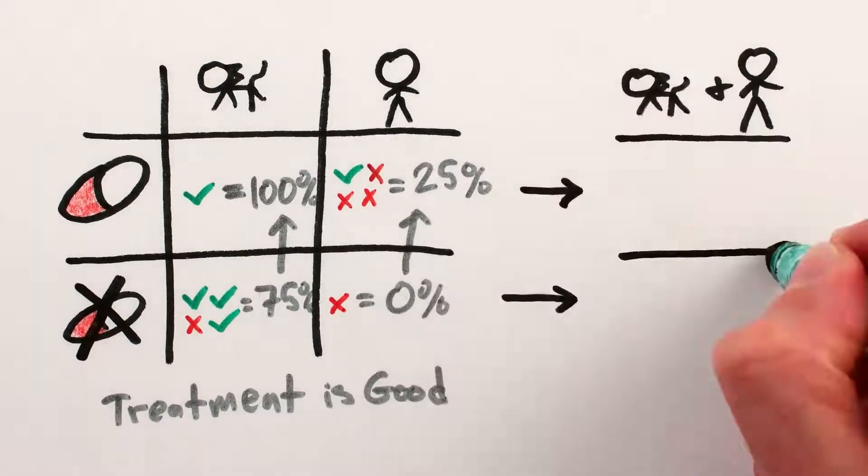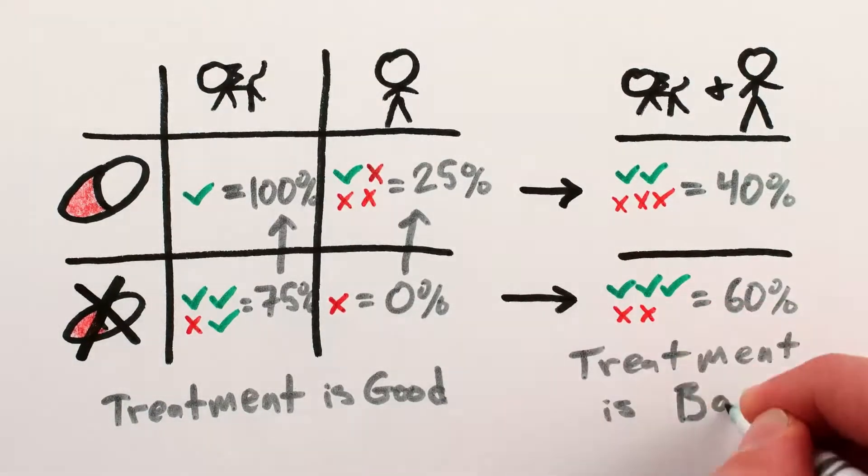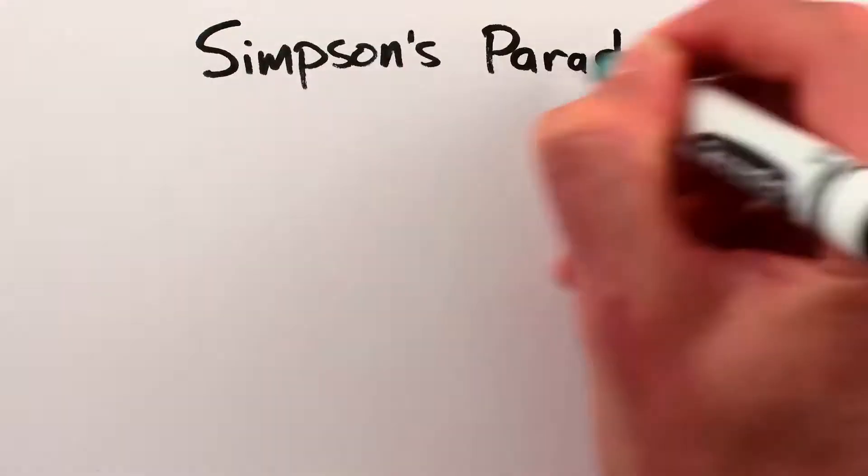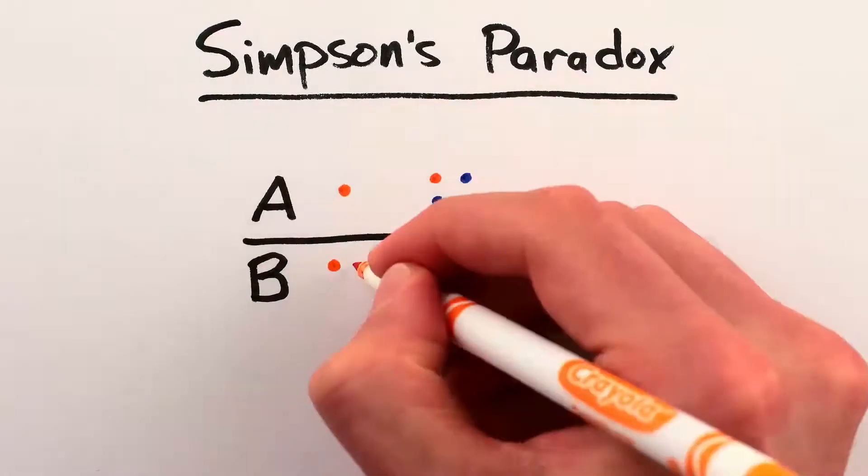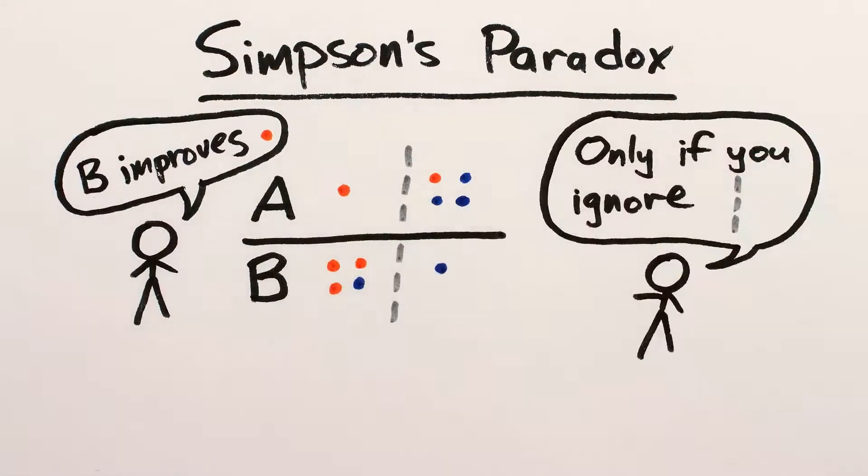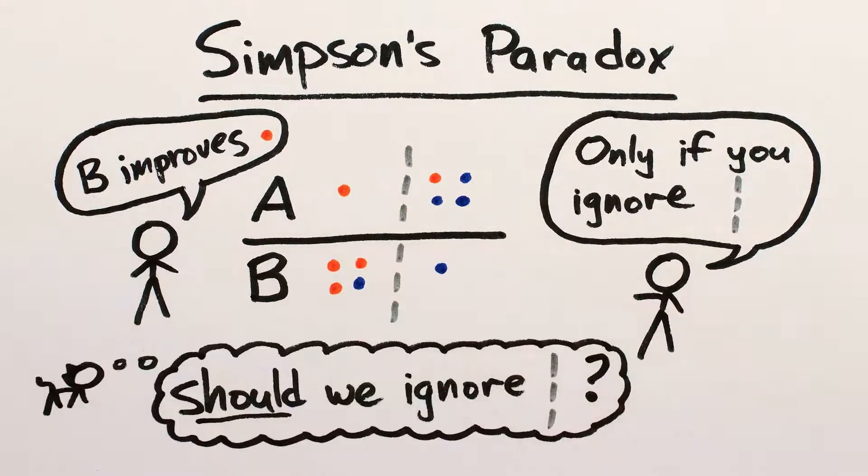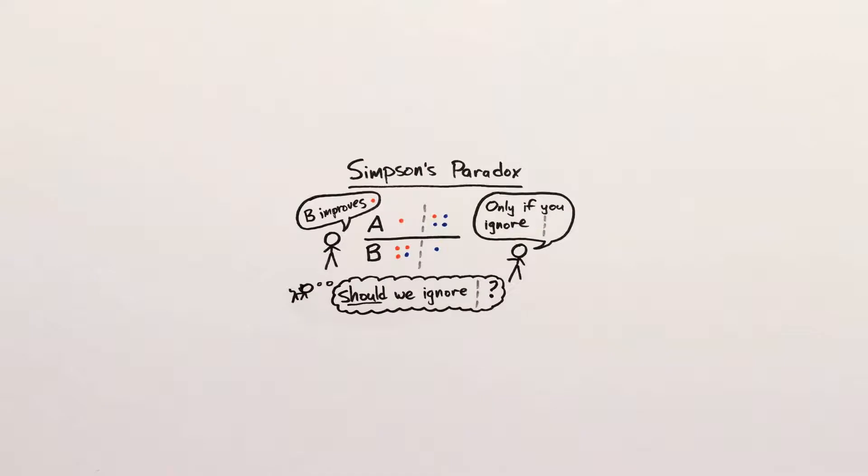Except that if we aggregate the data, among all people and cats treated only 40% survive, while among all people and cats left on their own, 60% recover. Which makes it seem like the treatment reduces the chances of recovery. So which is it? This is an illustration of Simpson's paradox, a statistical paradox where it's possible to draw two opposite conclusions from the same data depending on how you divide things up. Statistics alone can't help us solve it. We have to go outside statistics and understand the causality involved.